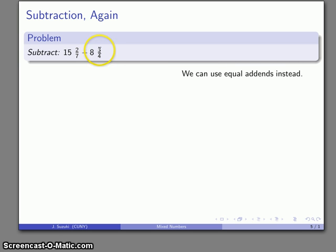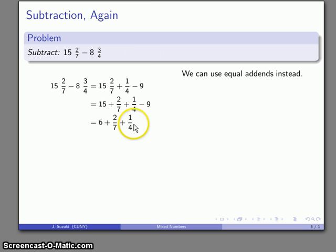So my equal addends, I'm going to increase both of my terms by a quarter. So there's my 15 2/7 increased by a quarter. 8 3/4 increased by a quarter is 9. Mixed numbers rewritten as a fraction plus a whole number. And I can handle 15 minus 9, my whole number subtraction. And then finally, I have this fraction to add 15/28.